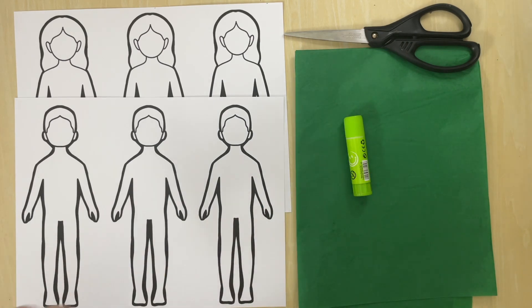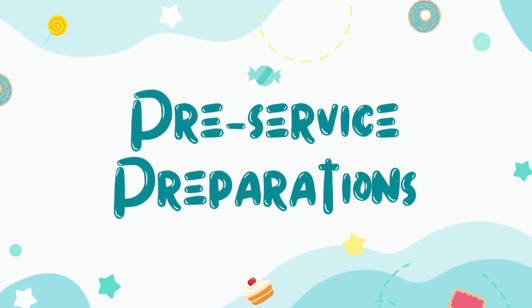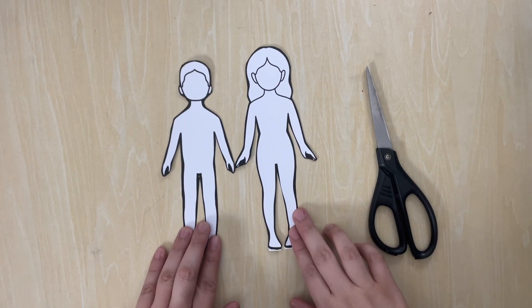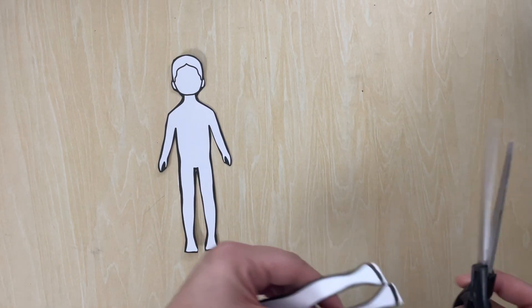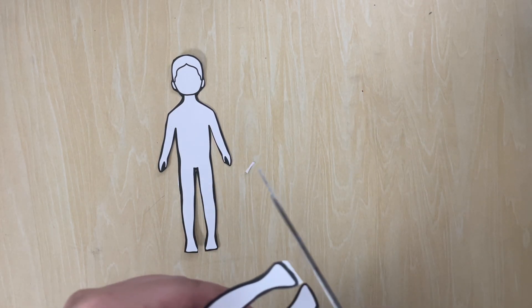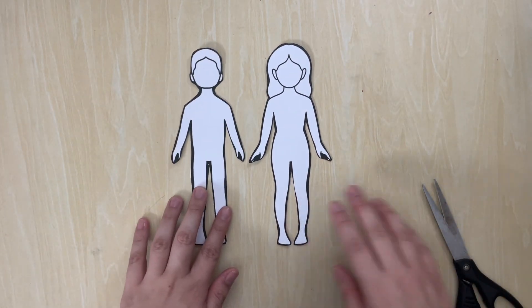A glue stick and some crayons, but this is for later. Now let's prepare our craft. First step, just cut Adam and Eve. It's that easy. Cut along the outlines like so, and then you can set them aside.